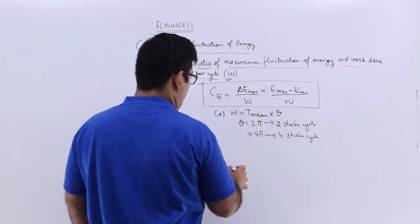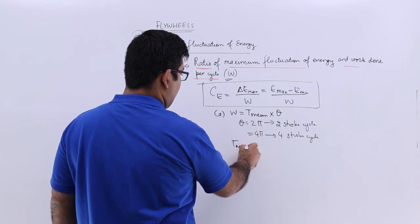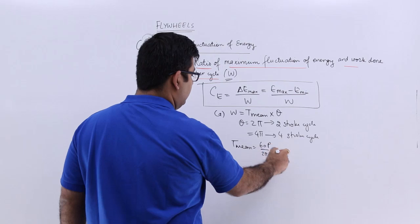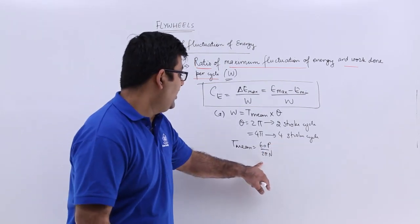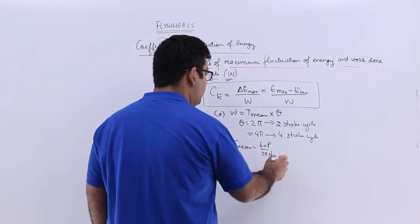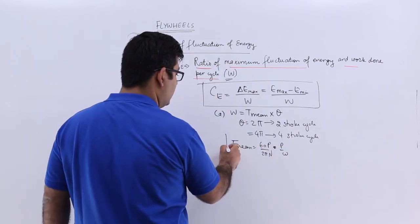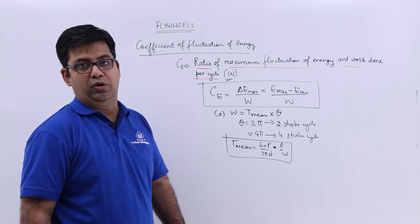Now this mean torque can be found out by using this formula: 60 into P upon 2π n. That is, 2π n upon 60 is omega; you get P upon omega. So this is how you can find out the mean torque.